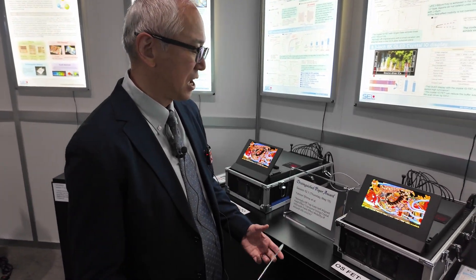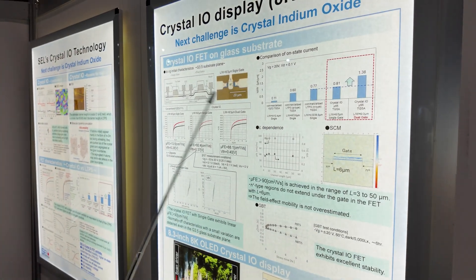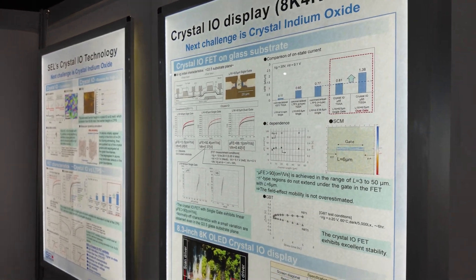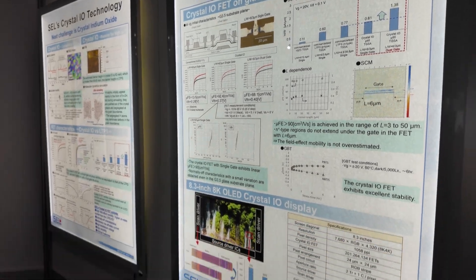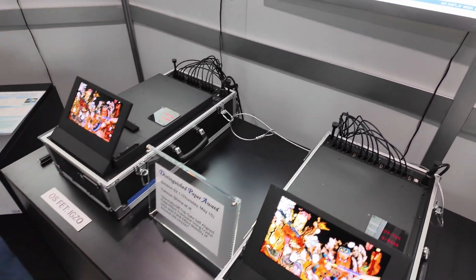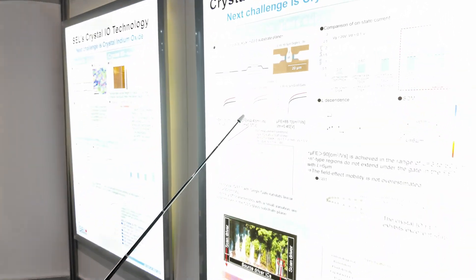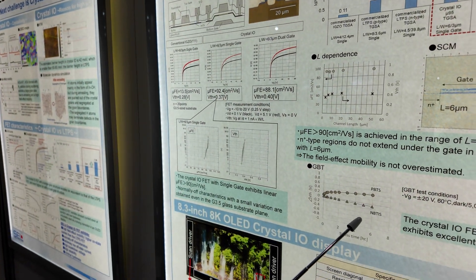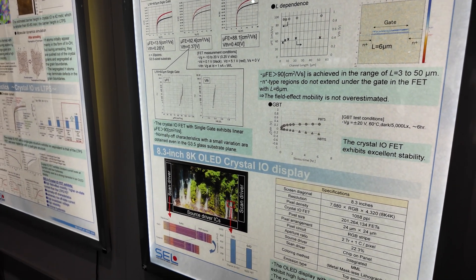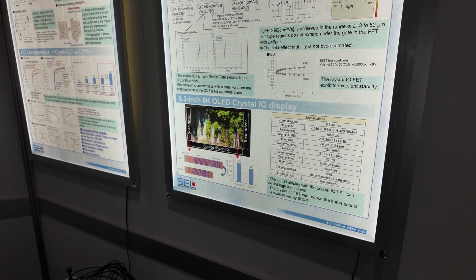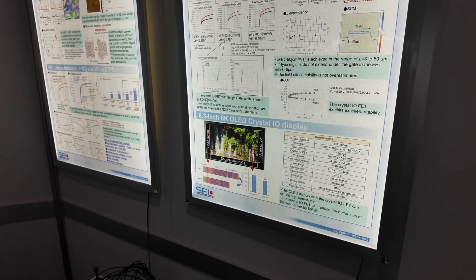This high mobility type has good ion characteristics. Basically, high mobility types of oxide semiconductors — it is hard to balance these kinds of normal characteristics and good reliability. However, our crystal engine oxide can successfully achieve these desirable good characteristics.